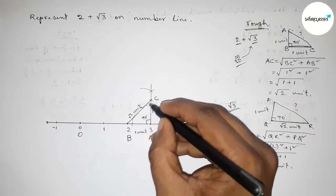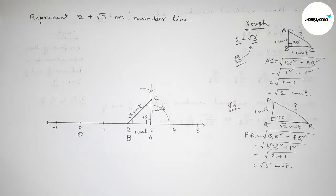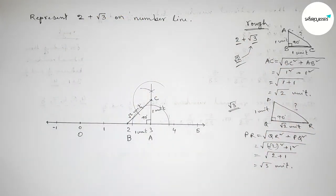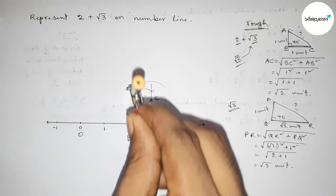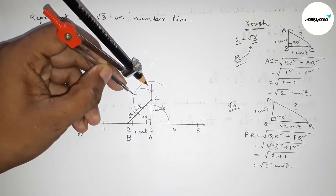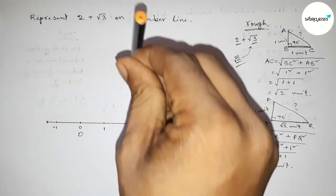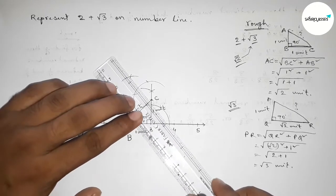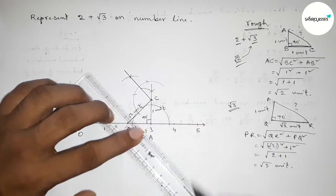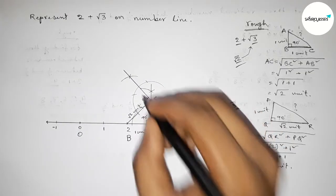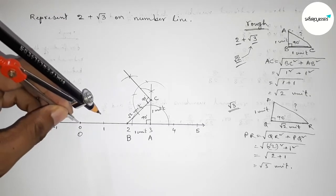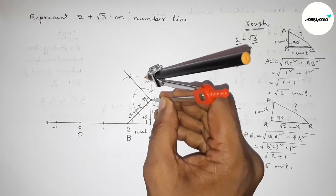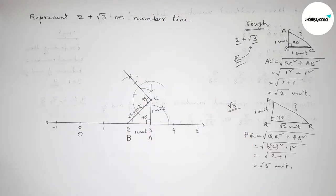Now applying this concept on the line. Drawing a 90 degree angle at point C: taking any length, drawing an arc, putting the compass at that point, drawing another arc with the same length, then again with the same length, and joining to get a 90 degree angle at point C. Now taking 1 unit length by compass.